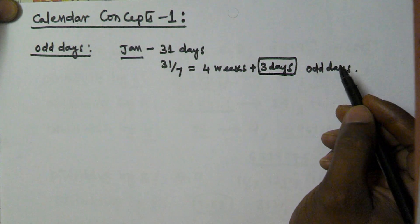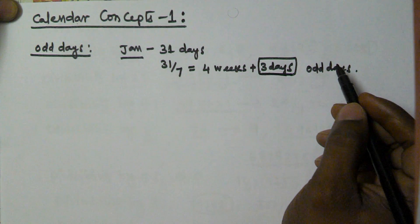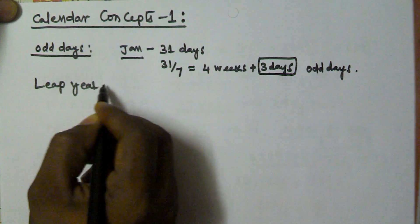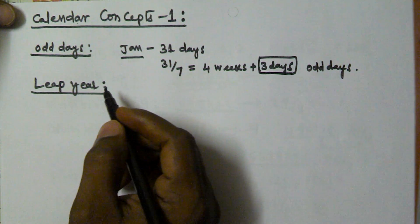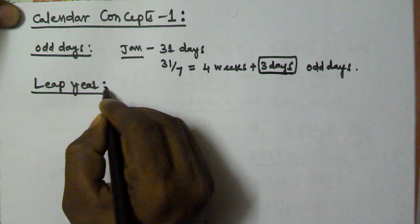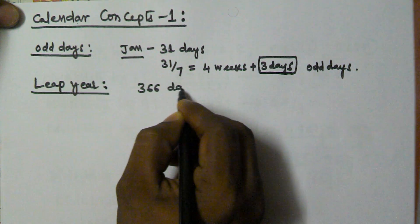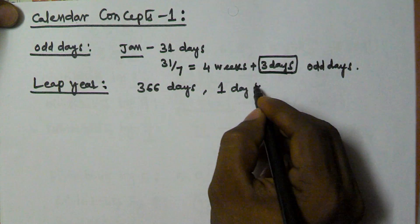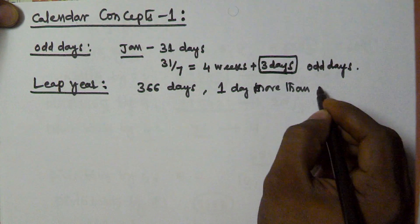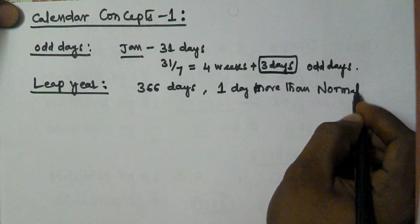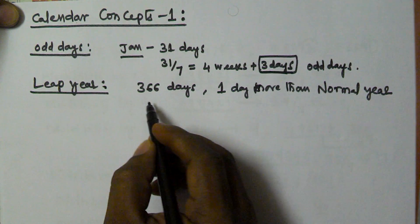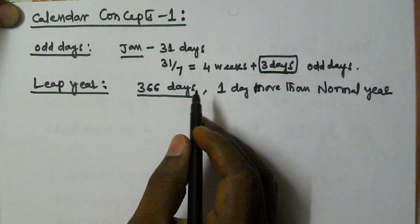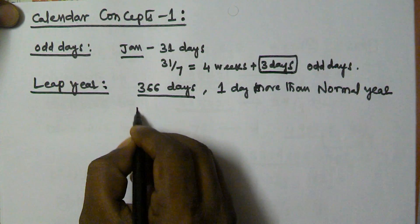In a given period, the number of days more than the complete weeks are called as odd days. Next one is leap year. A leap year is going to contain 366 days — one day more than a normal year.